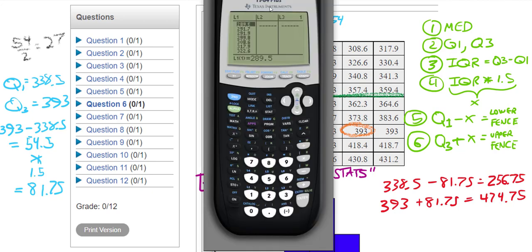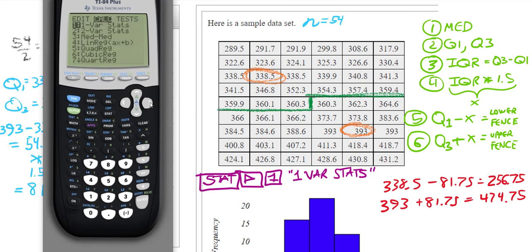So we're going to now follow those instructions by clicking the STAT button, clicking the right arrow button, and then clicking the one button. Or it's actually highlighted already, you can just hit enter. Now your list has to be list one. If it doesn't say list one, click the second key and then click the one key. And then move down to calculate. If you hit enter, you get a bunch of information. Click the down arrow key a few times, and you can see that the sample size is 54. Our minimum is 289.5, our maximum is 431.2. And here you have your Q1 and Q3.